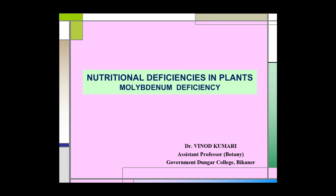Nutritional Deficiencies in Plants. Under this topic today we are going to study about molybdenum deficiency. In this e-lecture we are going to study about the major functions of molybdenum in plants, molybdenum deficiency symptoms, soil conditions that affect molybdenum availability to plants, and control of molybdenum deficiency. Let us start.